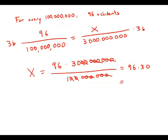And so now if we just multiply 96 times 30, we get 2880, and this is answer choice C.